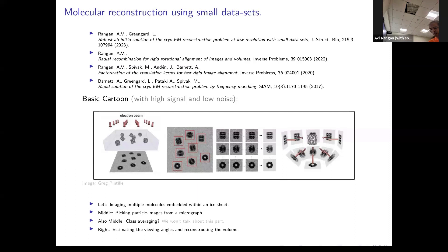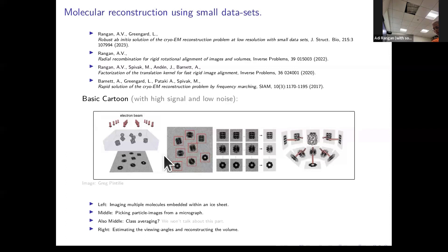Just to recap, here's a picture many of you have seen before in other talks, illustrating the scenario that we're interested in. On the left, we have a cartoon of an ice sheet within which are many proteins at different orientations. An electron microscope can image these proteins, producing a micrograph shown in the center, from which individual particle images can be picked. If we have sufficiently many picked particle images, their viewing angles can be estimated and the volume corresponding to the protein can be reconstructed.